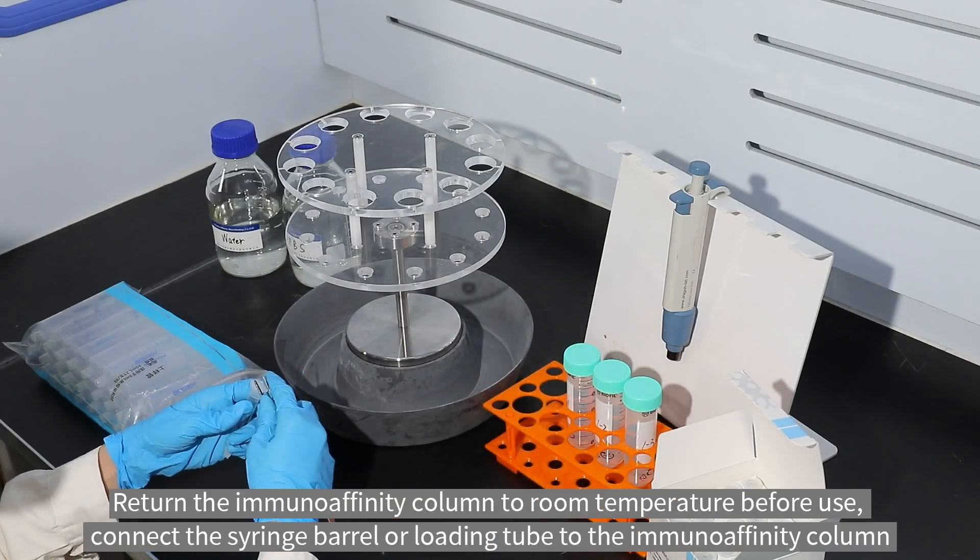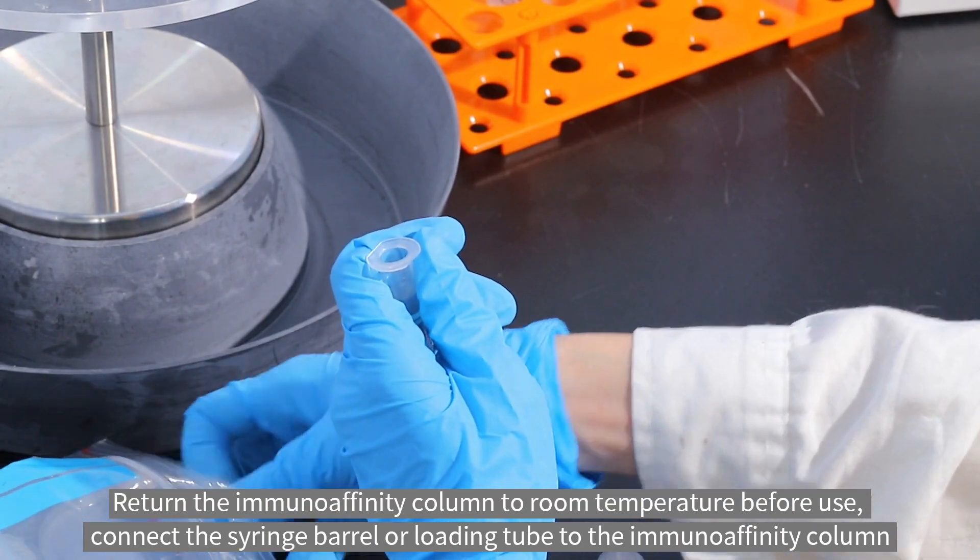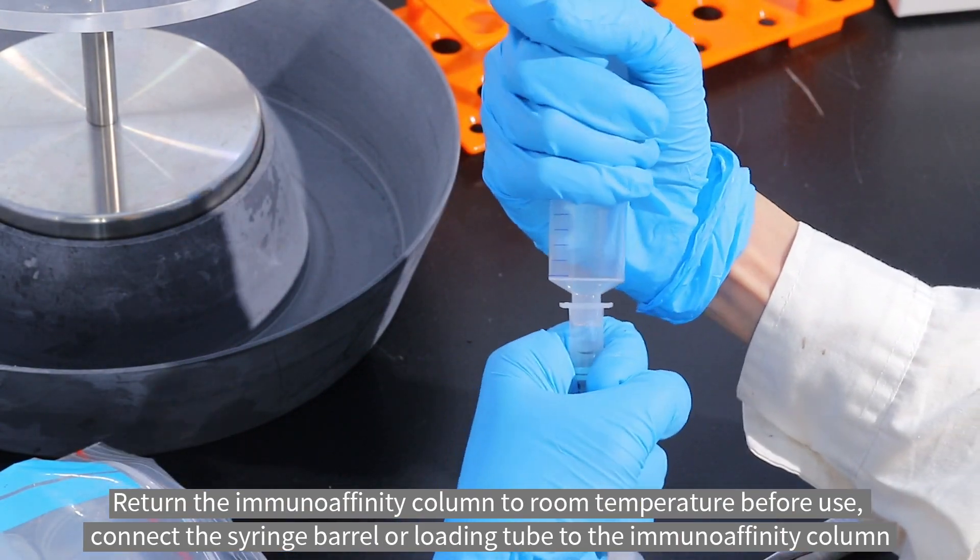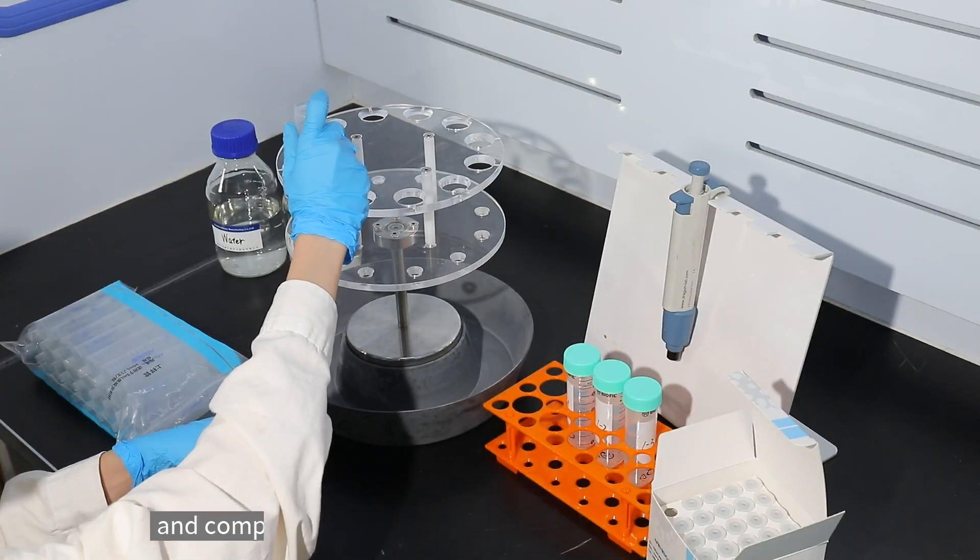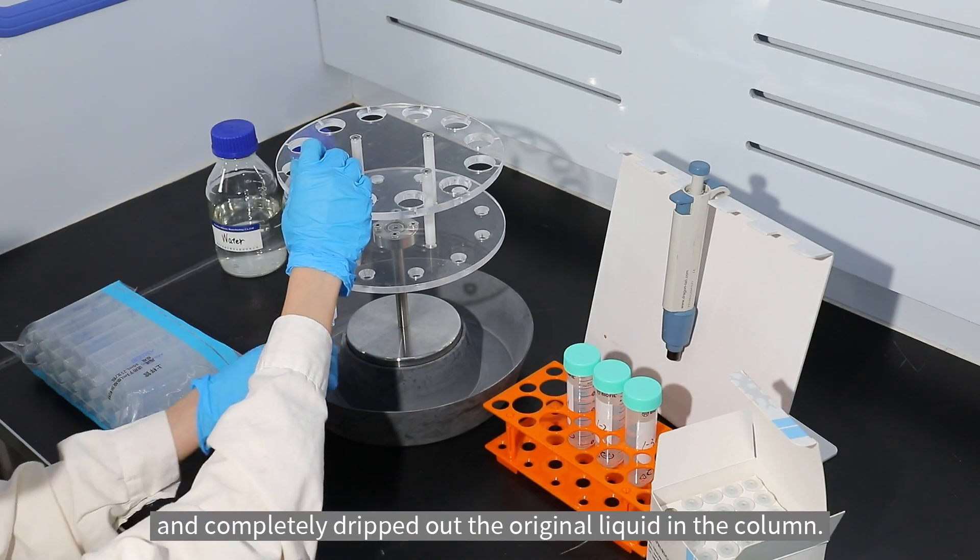Return the immunoaffinity column to room temperature before use. Connect the syringe barrel or loading tube to the immunoaffinity column and completely drip out the original liquid in the column.